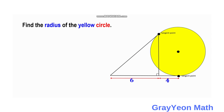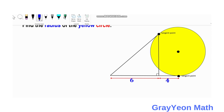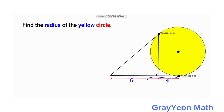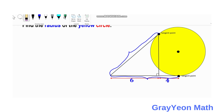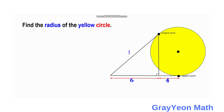First, we notice that since there are two tangents outside this circle, based on Theorem 2 these two tangents are equal. The tangent at the bottom is divided into six units and four units. Since the top tangent segment equals the bottom tangent segment, we simply add six and four to get the top tangent segment, which is ten units.